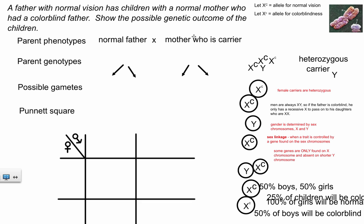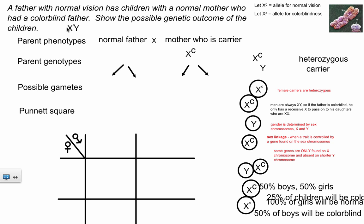The mother is a carrier, which means she has to be normal in phenotype. She has to have X big C — she's a girl, so she can't have a Y. Is her second chromosome X big C or X little c? Because her father was colorblind, her father had to be X^c Y. Since she's a girl, her dad couldn't pass her a Y, so her colorblind father had to pass her X little c. That's how she's established as a carrier: X^C X^c. The father has to be XY because he's a boy, and he has normal vision, so his genotype is X^C Y.